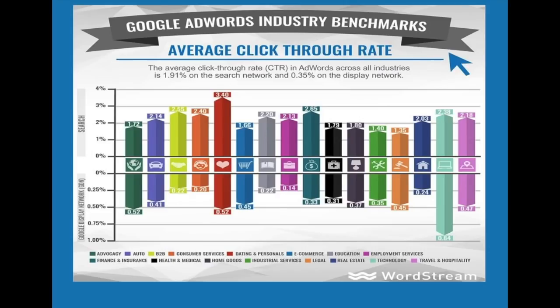Coming down, again from WordStream, so Google AdWords industry benchmarks. The average is 1.91% across the search network and 0.35% on the display network. This represents different industries. Taking e-commerce here, you can see the search click-through rate is 1.66% and display is 0.45%. So if you're in e-commerce, that might be where you want to start.